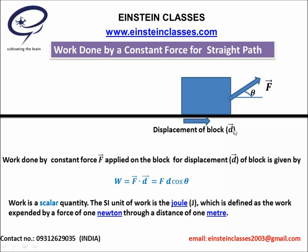From the concept of scalar product or dot product, we can write F dot D equals F D cos theta. Here, F is the magnitude of the force applied, D is the magnitude of the displacement, and theta is the angle between the force and displacement. From the definition, it is clear that work done by a force is a scalar quantity — that means the physical quantity work is a scalar quantity.